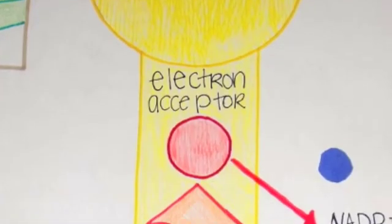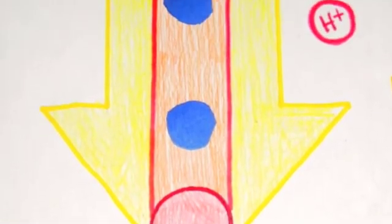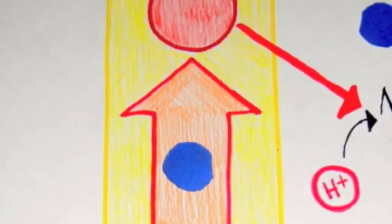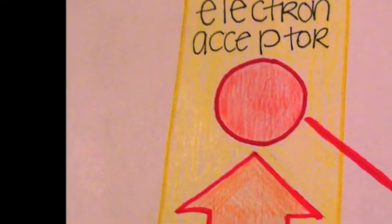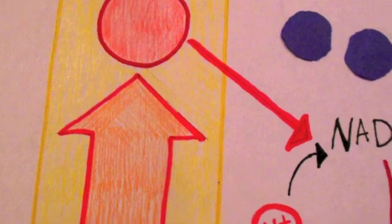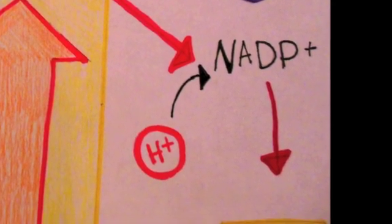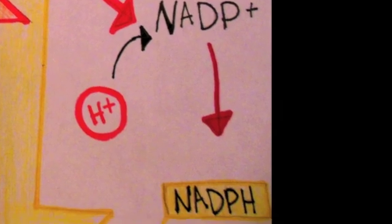The pigment complex absorbs solar energy. Energized electrons leave its reaction center and are captured by electron acceptors. The electron acceptors in Photosystem I pass their electrons to NADP+ molecules. Each molecule accepts two electrons to become the reduced form, which is NADPH.